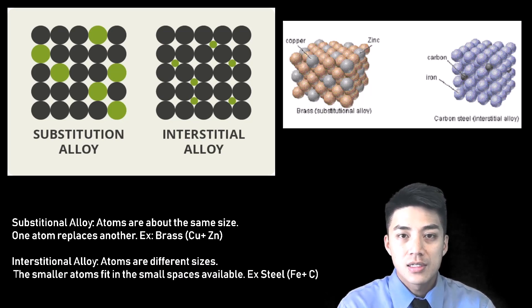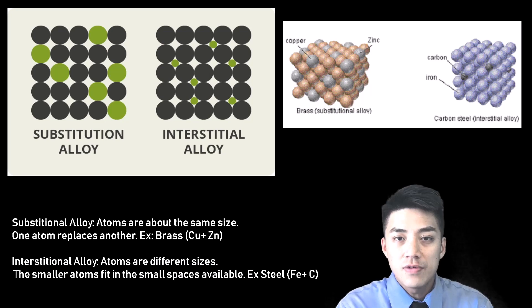To give you more visuals, you can see how in brass, the copper and zinc atoms are basically just alternating and mixing evenly with each other. Meanwhile, steel is interstitial because you can see how the carbon atoms are much smaller than the iron atoms, and the carbon atoms are fitting in the small gaps.